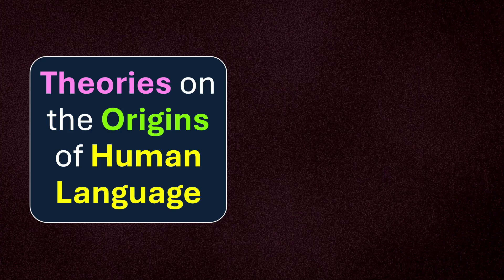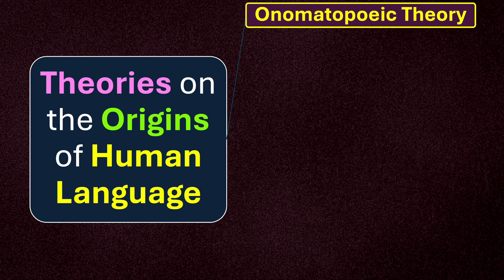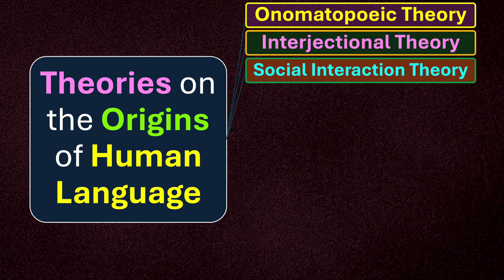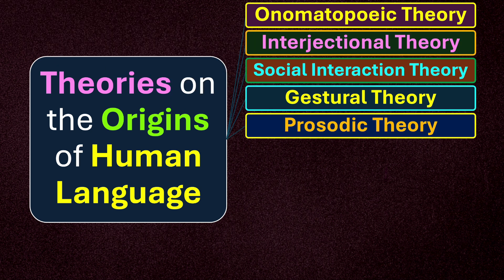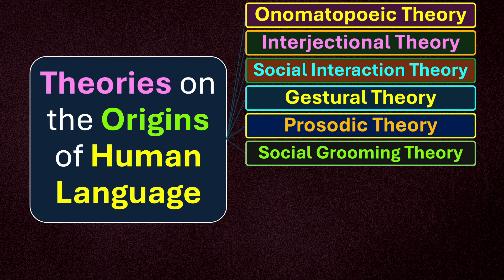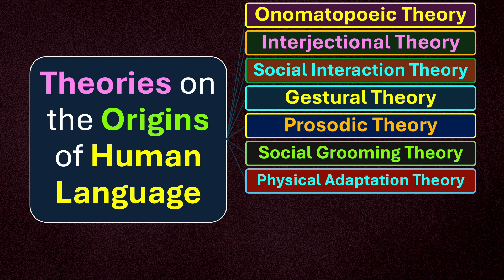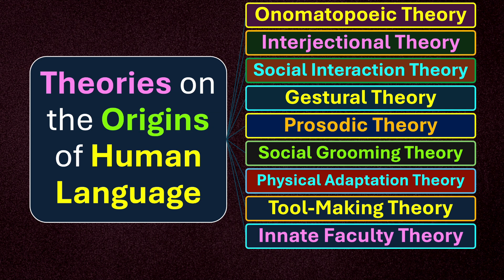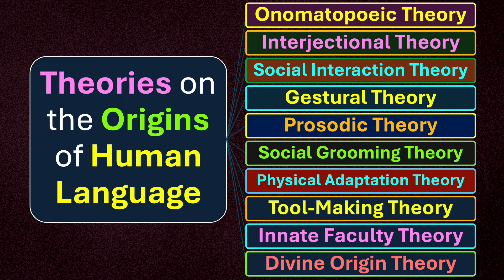Hello and welcome to a new lesson on theories of the origins of human language. In this lesson we will talk about onomatopoeic theory, interjectional theory, social interaction theory, gestural theory, prosodic theory, social grooming theory, physical adaptation theory, tool making theory, innate faculty theory, and divine origin theory. Let's discuss each one of them in detail.